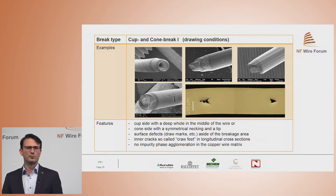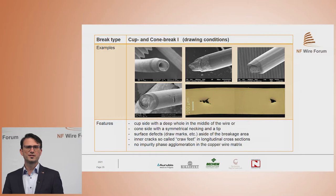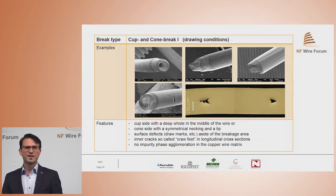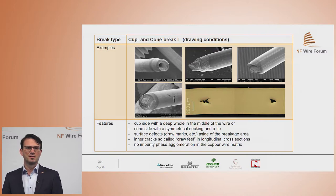First, the cup and cone break. You have a cup side with a deep cavity in the middle of the wire, or a cone side with a symmetrical necking and a tip. You will normally see surface defects, draw marks, etc., beside the fracture area, and no impurities or face agglomerations, but inner cracks — so-called chevron cracks — in longitudinal cross sections.